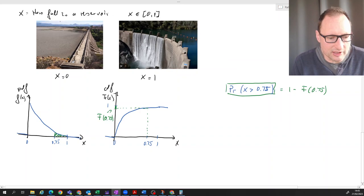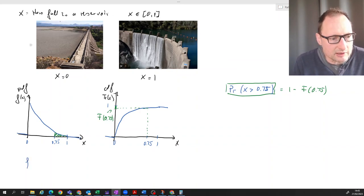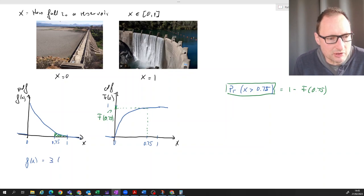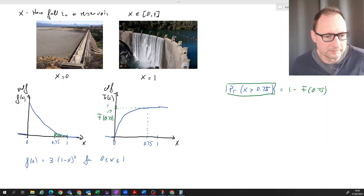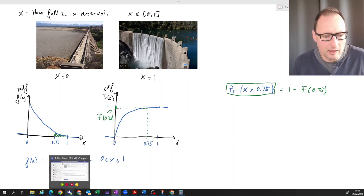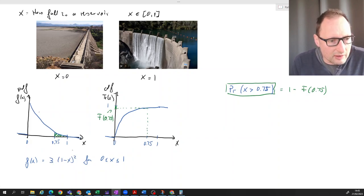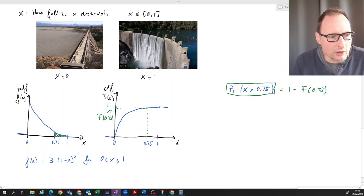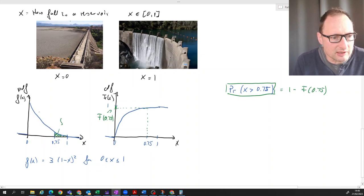So let's say this probability is described by the following density function: 3(1-x)² for values of x in the interval between zero and one, and it's zero otherwise. So let's say this describes this function here.